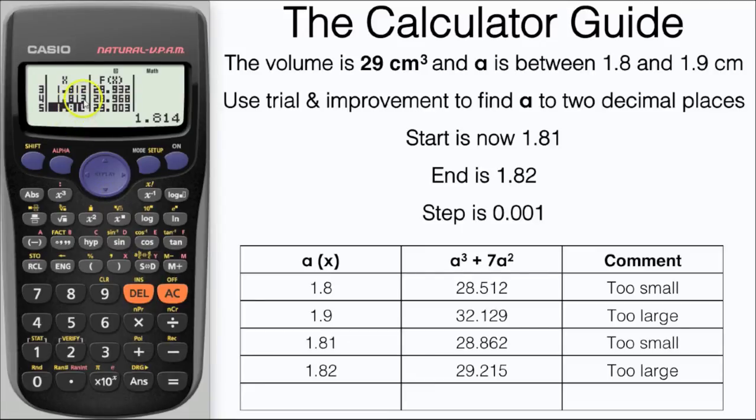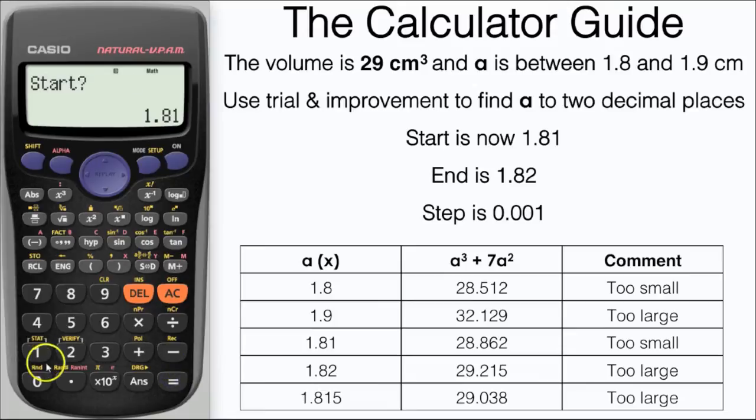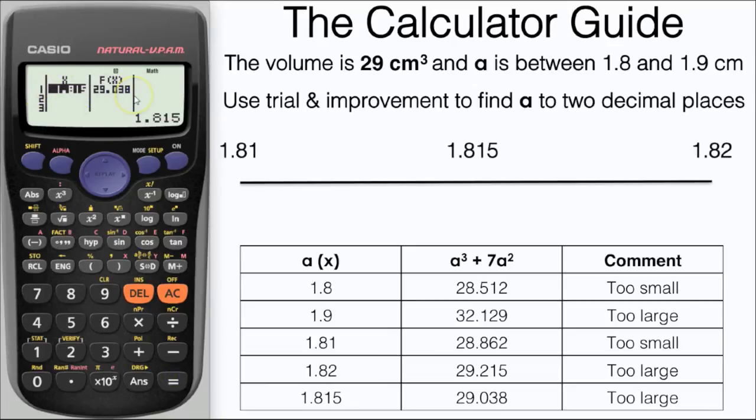Now we can see our actual value would lie somewhere between 1.813 and 1.814 but we're going to write down the halfway value 1.815, here we have it 29.038. We could have just inputted this but just do the trial again and input our start and end as 1.815 and a step as 1 then we can just get the halfway value.